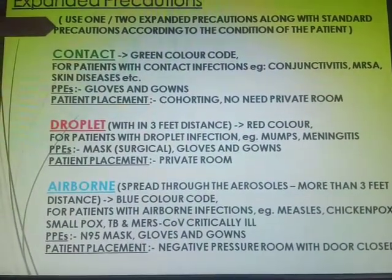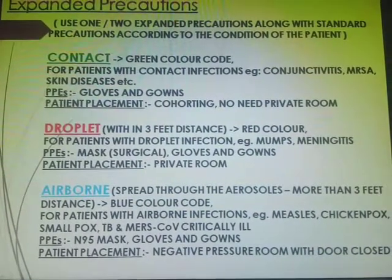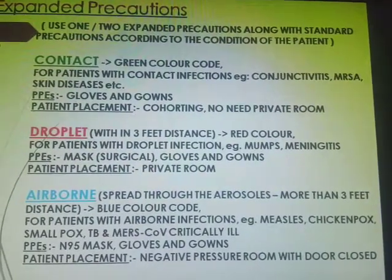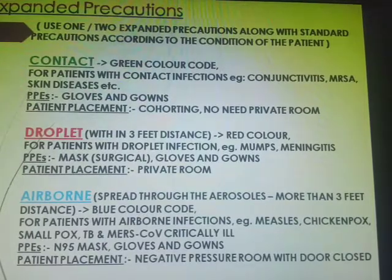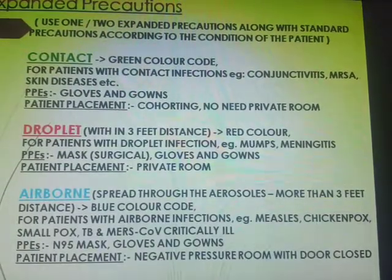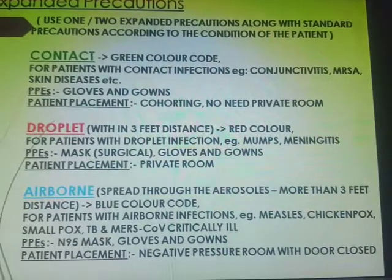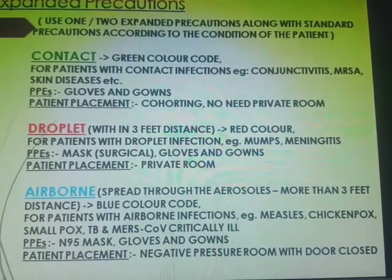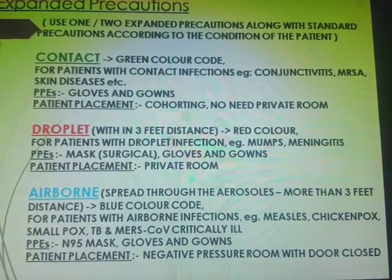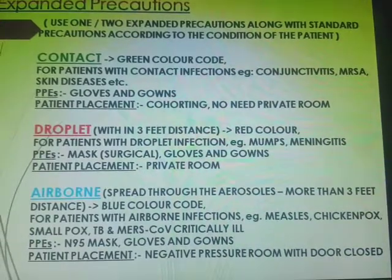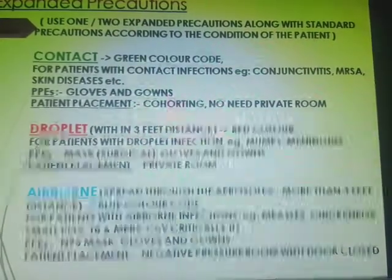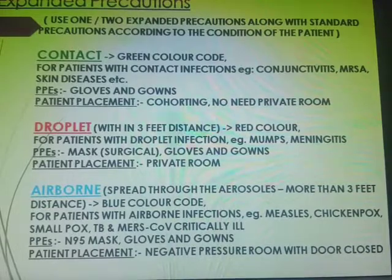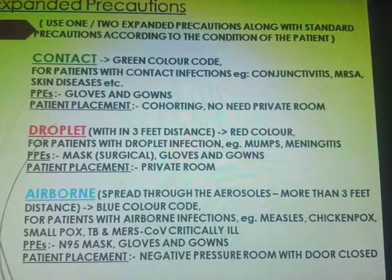Transmission-based precaution includes three types: contact precaution, indicated by a green sign — used for MRSA and skin diseases — requires gloves and gown. The patient must be in a single room. Cohorting is also possible: patients with the same signs and symptoms can stay in a double or triple bed room. No negative pressure is needed for contact precaution.